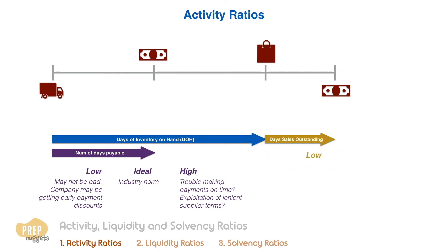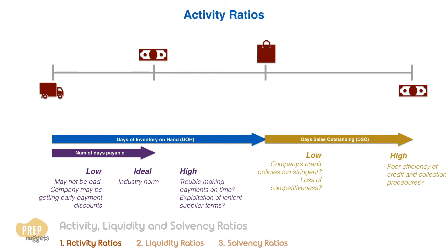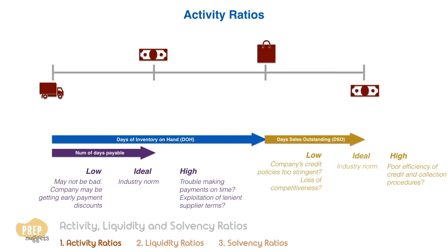Likewise, an excessively low days of sales outstanding could indicate that the company's credit or collection policies are too stringent, suggesting a loss of competitiveness. On the other hand, a relatively high days of sales outstanding would typically raise questions about the efficiency of the company's credit and collections procedures. As such, the desirable figure for the number of days sales outstanding should be somewhere close to the industry norm.